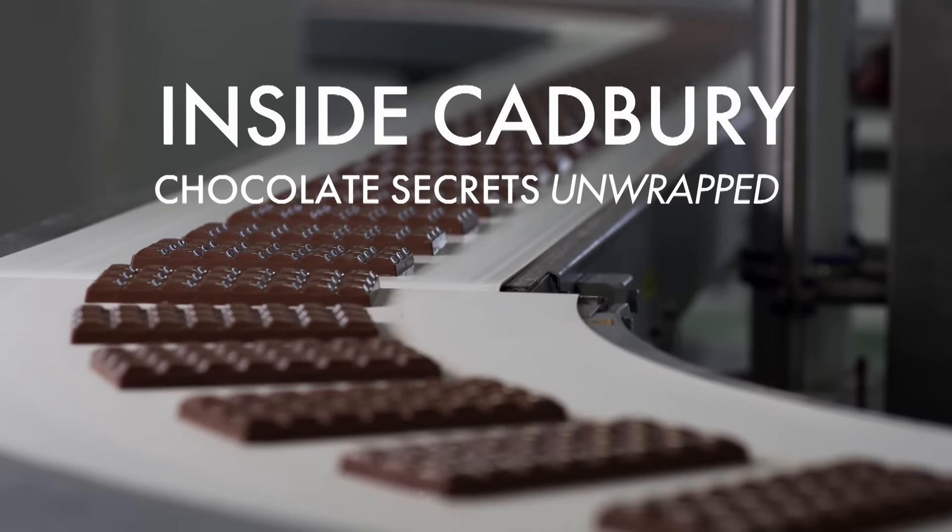He's meddled for two years with the sacred recipe and thinks he's conjured a solution. Replacing sugar with fibre. Sugar's in chocolate for sweetness. It also provides like a scaffolding within the chocolate. You take that scaffolding away, the chocolate falls down and you have to replace it with something else and we're replacing that with fibre.